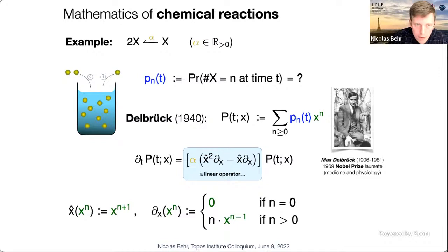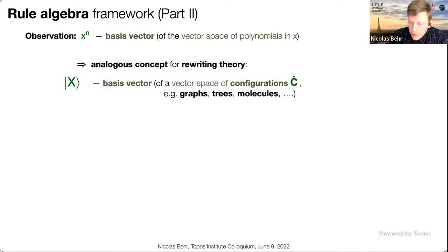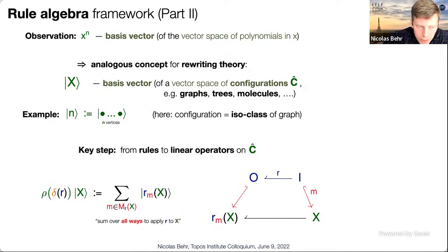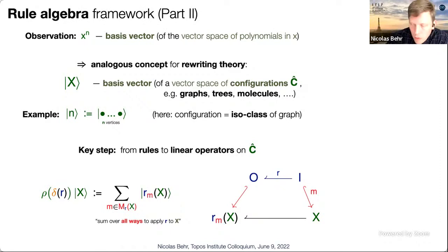Delbruck's formulation gives a nice differential operator characterization of the master equation, where x̂ is multiplication by the formal variable x and d/dx is the normal derivative. One can derive this directly from the rule algebra theory. You need a second vector space over configurations — iso classes of objects in your category C. For Petri nets, basis configurations are discrete graphs characterized simply by the number of vertices.